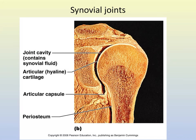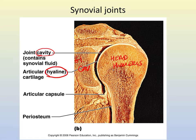Moving on to the last joint type: synovial joints. Synovial joints always have a fluid-filled joint cavity, and they always have a synovial membrane lining that joint cavity, creating synovial fluid. In this picture of the shoulder — the head of the humerus and the glenoid cavity of the scapula — notice there is a cavity between the bones. Within synovial joints the two bones do not touch; they are kept apart by this cavity, lined with articular cartilage, and filled with synovial fluid.